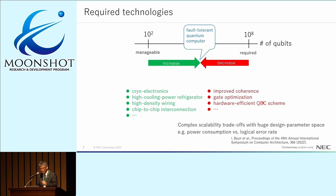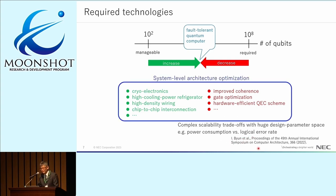It is important to develop individual technologies, but how to best utilize them is not a trivial task at all, because complex scalability trade-offs with a huge design parameter space are expected — for example, the trade-off between power consumption versus logical error rate. So we need to develop system-level architecture optimization methods to incorporate these technologies and maximize the power of the computer as a total system.